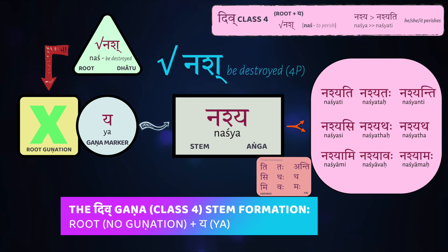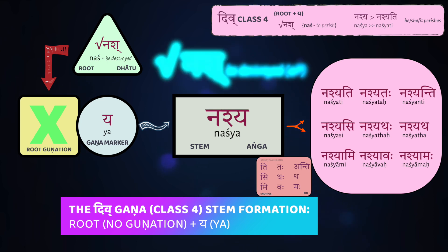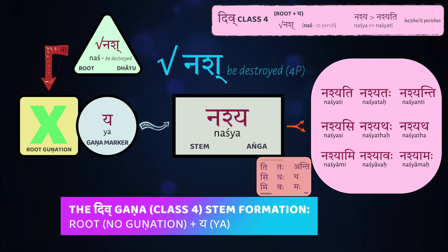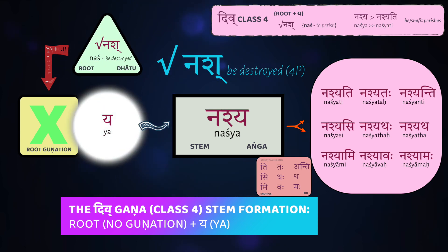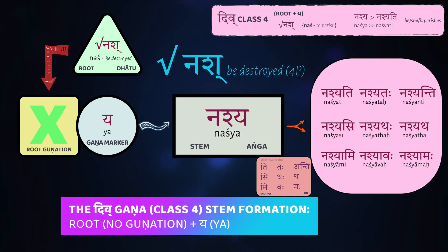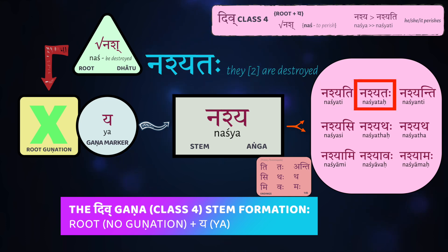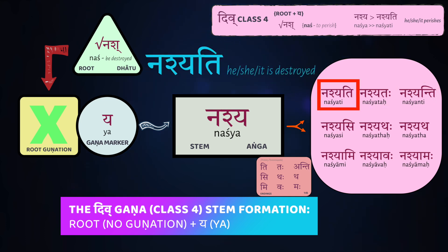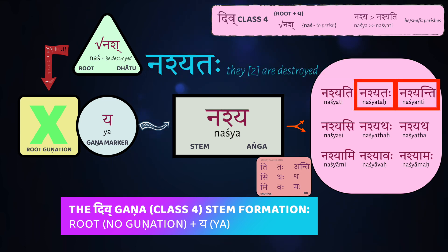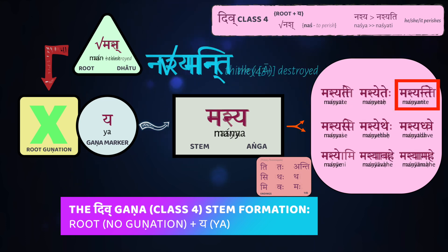Another fourth class root is naś, which means to be destroyed, to perish, or to fall apart basically. You take the root, add your gāna marker ya, and you get naśya as your stem. So the conjugations of this verb — parasmaipada again — are naśyati, naśyataḥ, naśyanti: he is destroyed, the two of them perish, three or more fall apart.